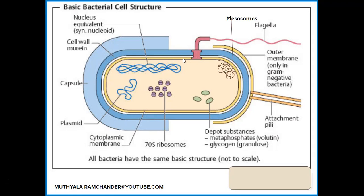In the bacterial cell membrane, some zones look like folding-like structures, called mesosomes. The mesosomes are the respiratory organs of prokaryotic cells. In eukaryotic cells, the respiratory organs are mitochondria, but in prokaryotic cells like bacteria, mitochondria are absent, so the mitochondria function is carried out by mesosomes.